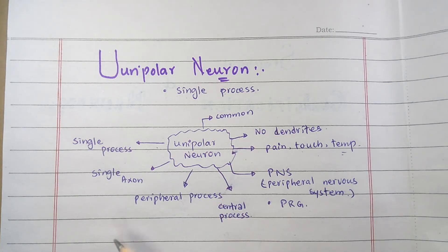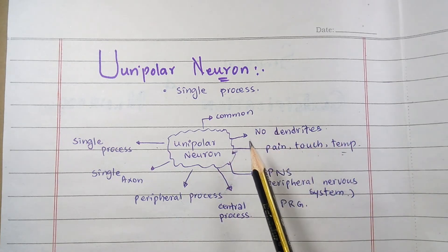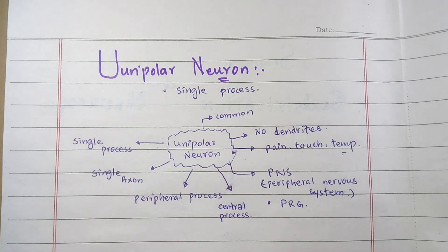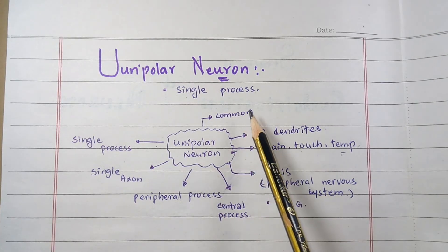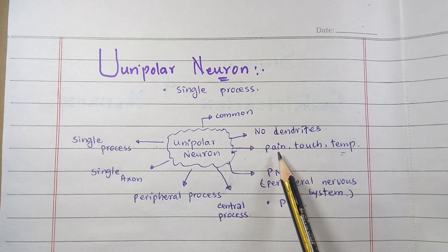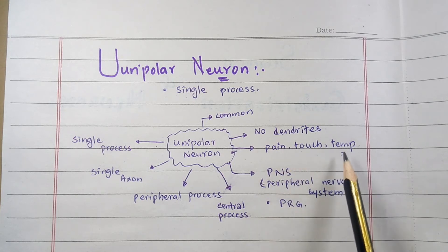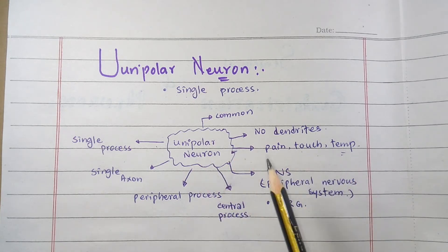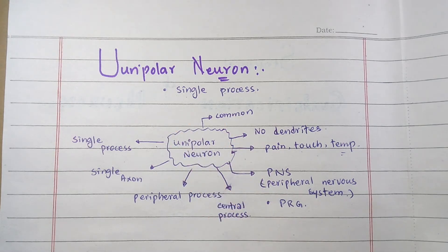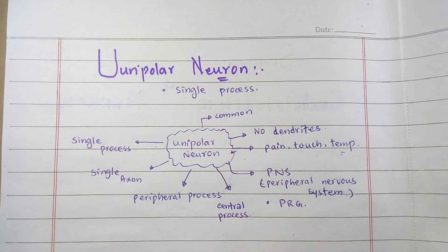Unipolar neurons lack dendrites — there is no dendrite in the unipolar neuron. They have only a single long axon. Unipolar neurons are the most common type of sensory neurons; they carry information about pain, touch, and temperature. This is the description of the structure of the unipolar neuron.